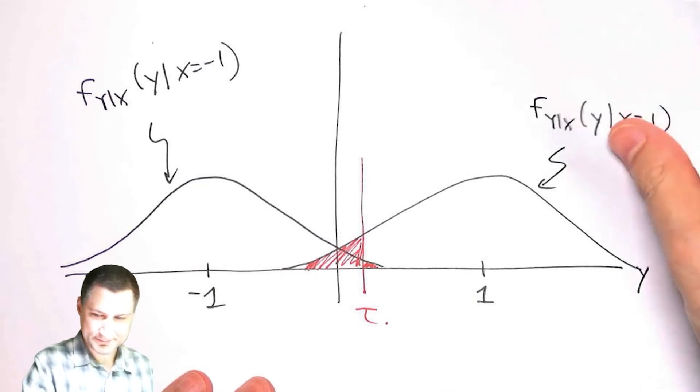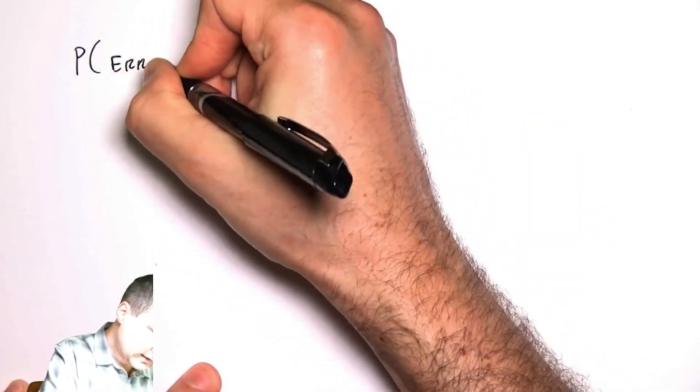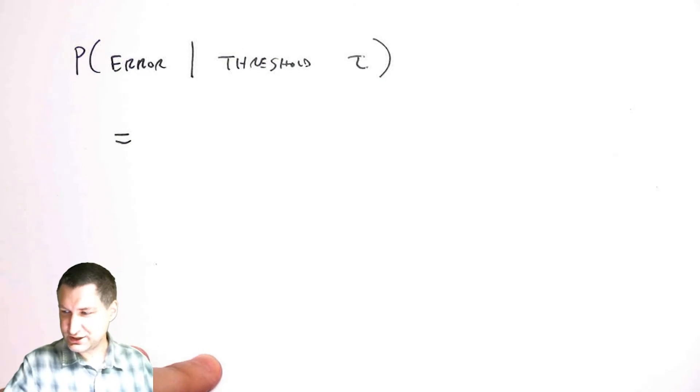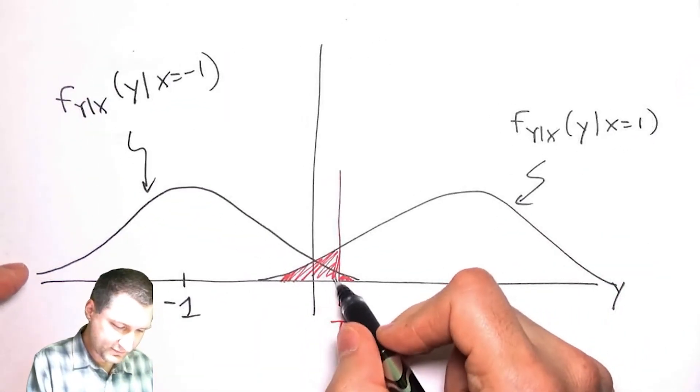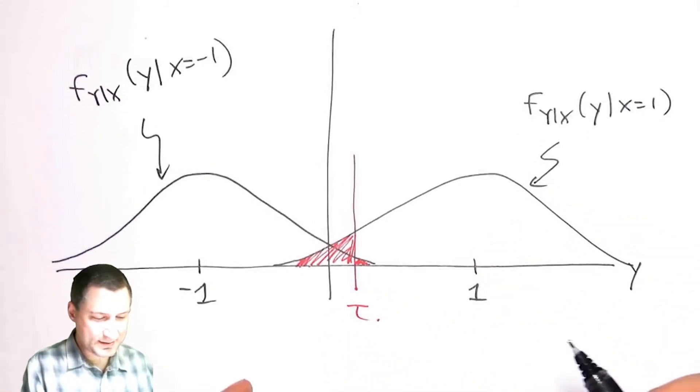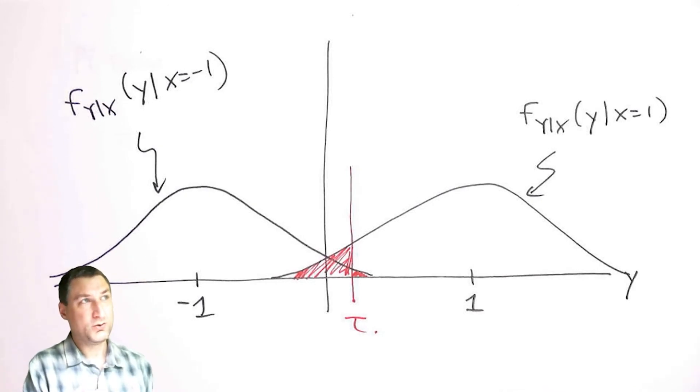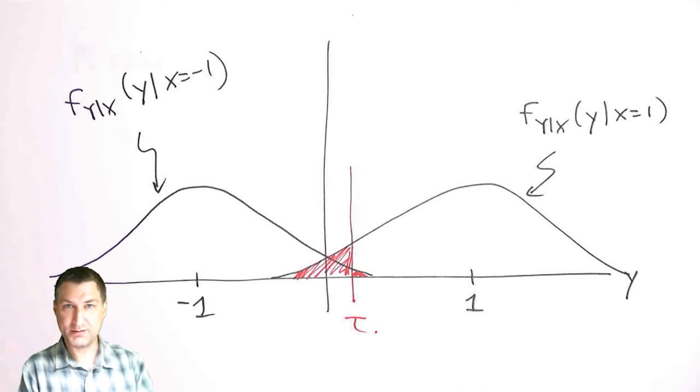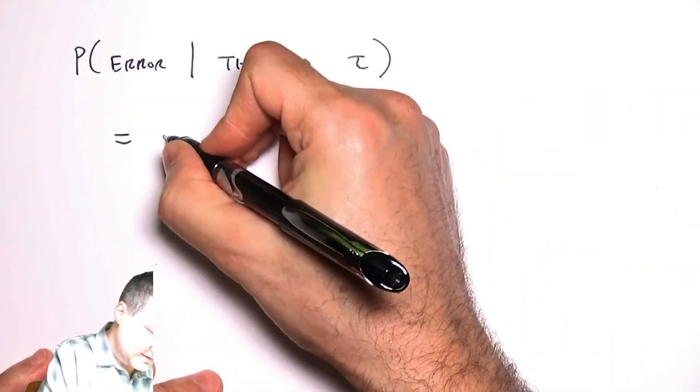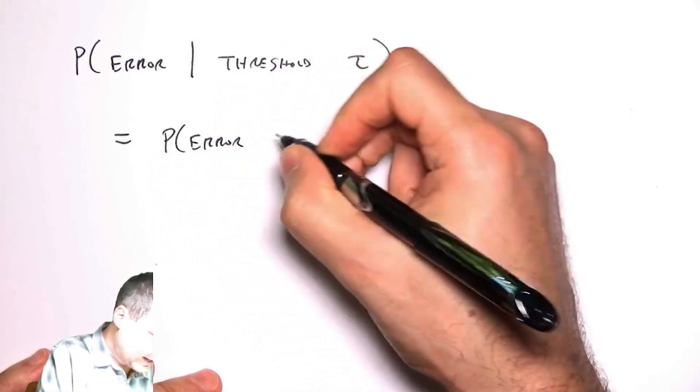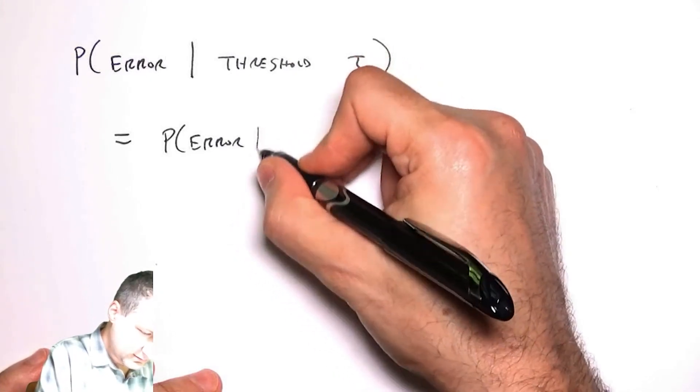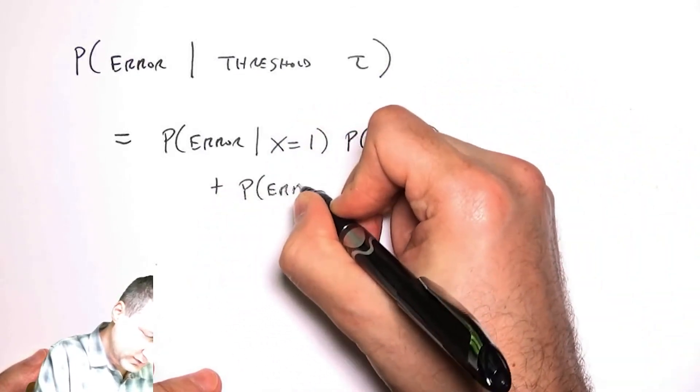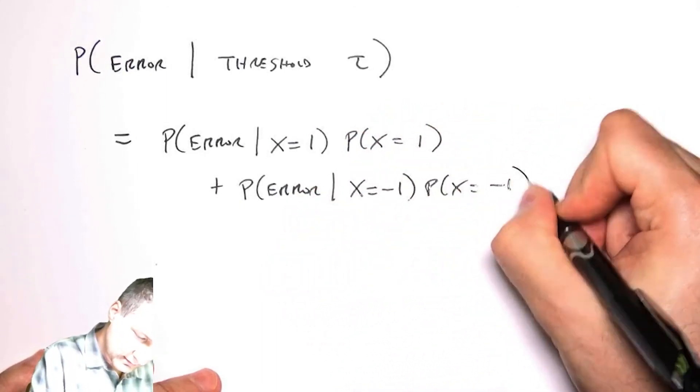Then I could actually solve for the probability of error given that I used this threshold. I could imagine that I could compute these things from the Q table. Why wouldn't I put the threshold right at zero? Well, one reason is that maybe it's more common for ones to go through the channel than minus ones, so maybe I should bias my decision more towards plus one than minus one. So I can say that this is basically the probability of error given that x equals one times the probability of one. This is again the law of total probability.